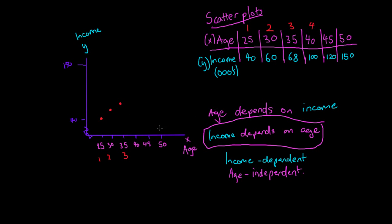Then we go to our fourth observation, which is 40 and 100k. There's a big jump there, and we plot that. Then our fifth observation is 45 and 120. We go to 45 and up to 120, which would be about here.